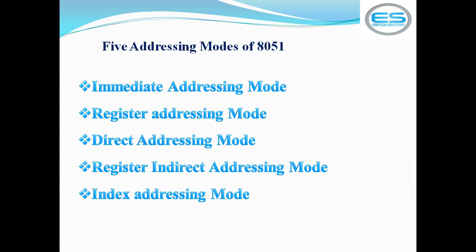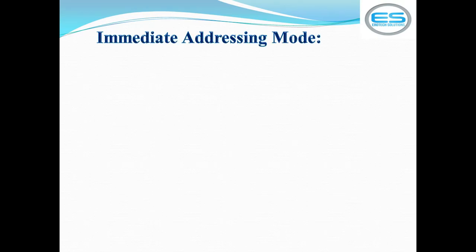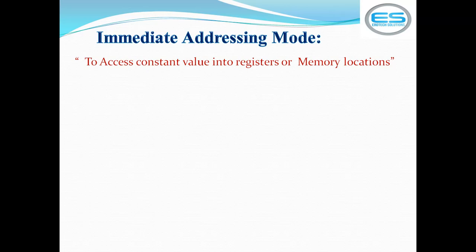Using these 5 addressing modes you can do different operations — how to access a constant value, how to do operations between registers, how to access memory locations, how to use registers to access memory, and how to access ROM memory from the 8051 controller. The first is immediate addressing mode, which helps to access a constant value.